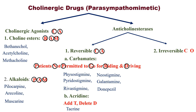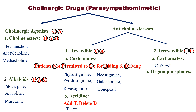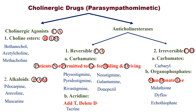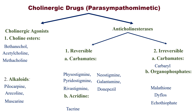For irreversible, C stands for carbamates — example is carbaryl — and O stands for organophosphates. Remember 'organ donation': a man donates an organ. IMDE — I for Malathion, M for Diphos, D for Ecothiophate — helps recall the organophosphate examples.